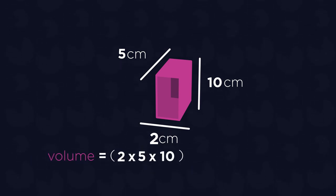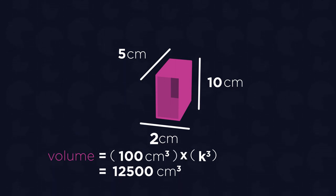Or we can simply multiply the original volume, so 2 times 5 times 10, which equals 100cm cubed, by K cubed, which is 5 cubed, which equals 12,500cm cubed.